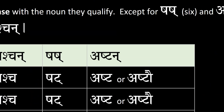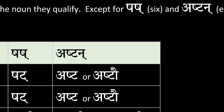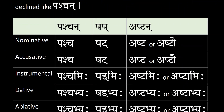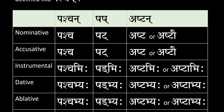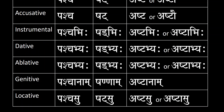Then, for the declension of Aṣṭan, which is eight: for Nominative, we have Aṣṭa or Aṣṭau. For Accusative, we have Aṣṭa or Aṣṭau. For Dative, we have Aṣṭabhyaha or Aṣṭabhyaha. For Ablative, Aṣṭabhyaha. For Genitive, we have Aṣṭanām. And for Locative, we have Aṣṭasu or Aṣṭāsu.